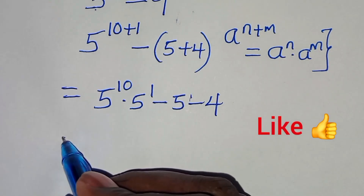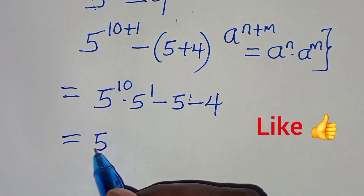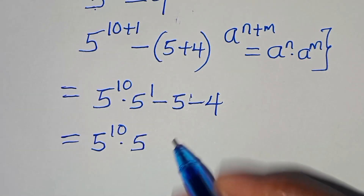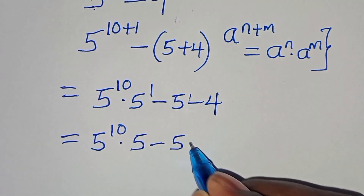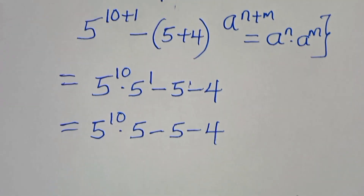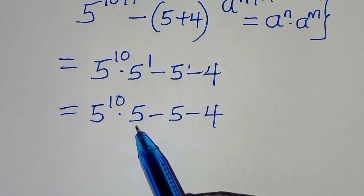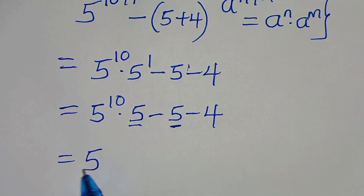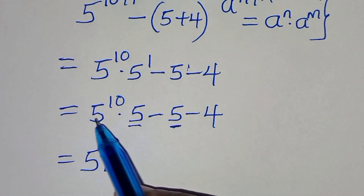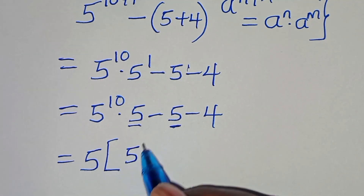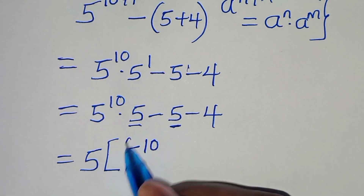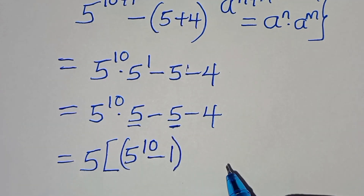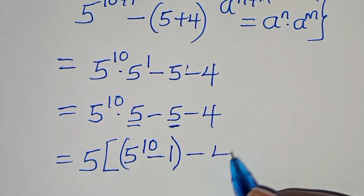So now we have 5 to the power of 10 multiplied by 5 — since 5 to the power of 1 is 5 — minus 5, then minus 4. Since 5 is common here, we can factor out 5 so that we have 5 times the quantity 5 to the power of 10 minus 1, then minus 4.